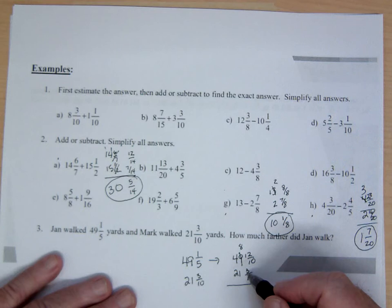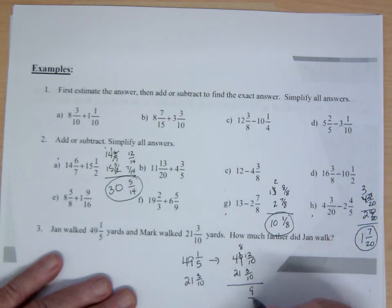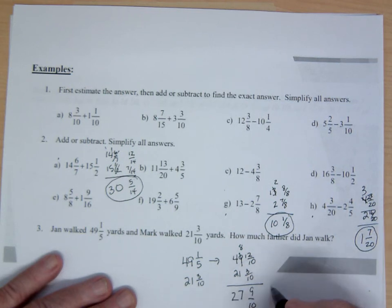Now I cannot take 3 from 2. So I have to borrow. I will make that an 8 and I will bring over 10 over 10, which makes that 12 over 10.